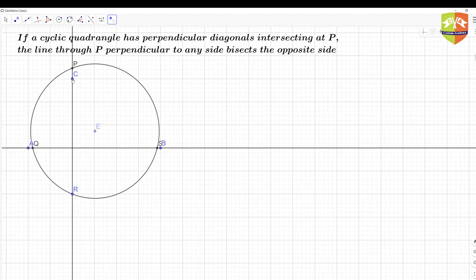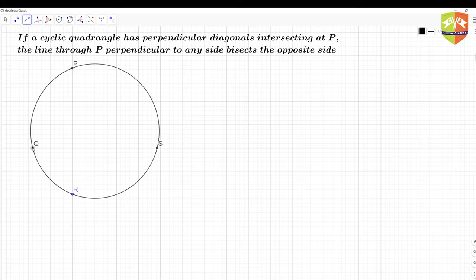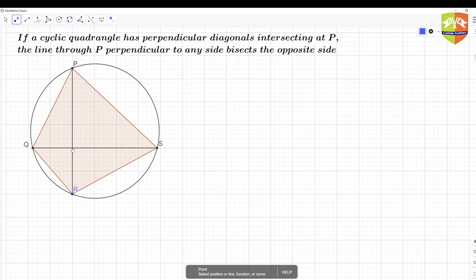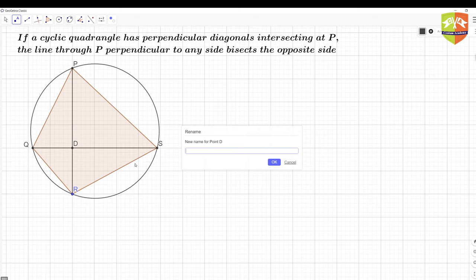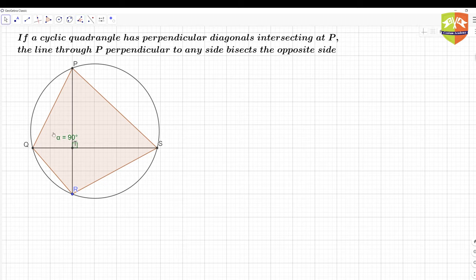I'll hide the construction lines and auxiliary objects. Now I can draw the segments: QS and PR are the two diagonals. I can then create a polygon — the cyclic quadrangle PQRS — where the diagonals are perpendicular to each other. Let me call the intersection point T.